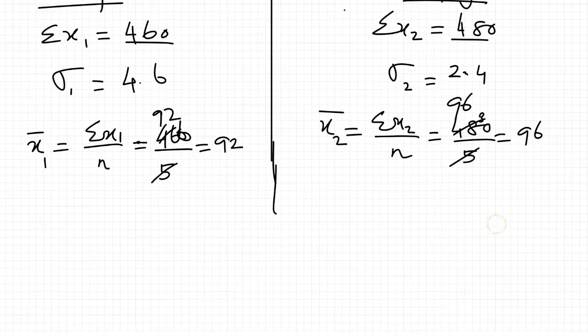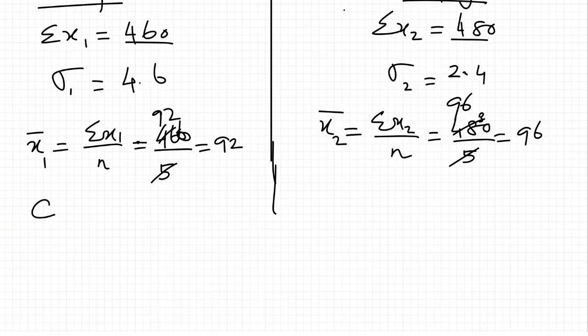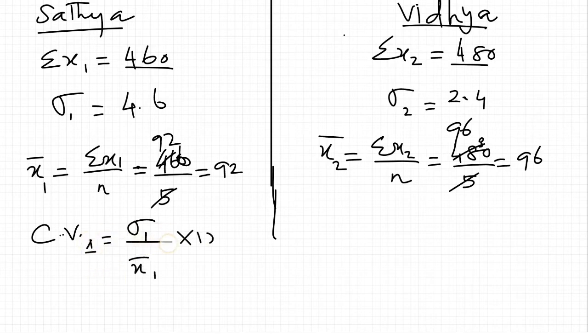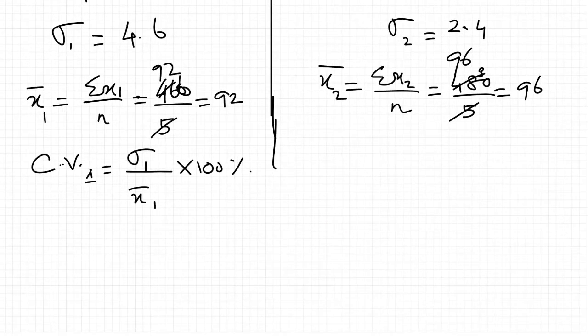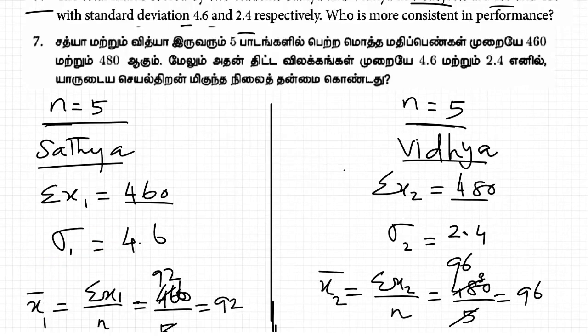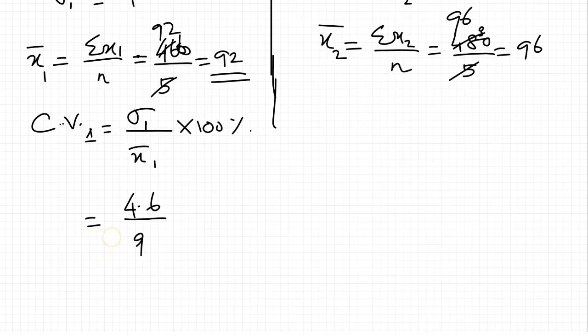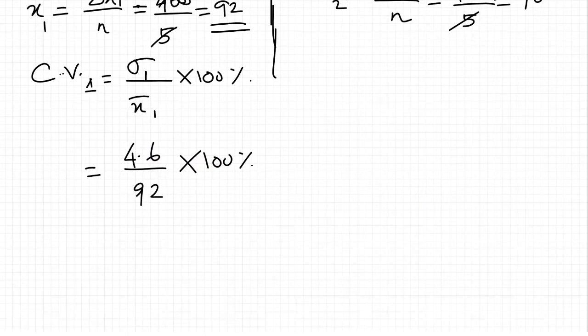Here 96 and here, coefficient of variation, that is equal to standard deviation 1 by x bar 1 into 100%. Now, 4.6, mean average 92, so 92 into 100%.